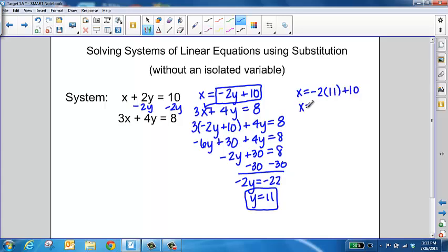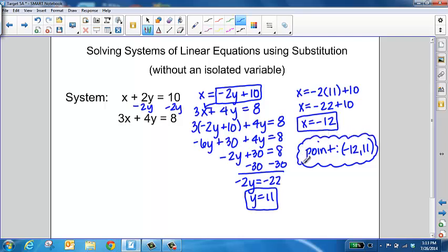This gives us x = -22 + 10, so x equals -12. Once you have both values for x and y, write your solution as a point. The solution to this system would be (-12, 11). Remember, you can always check by substituting -12 and 11 into both equations.